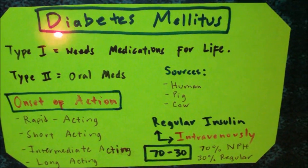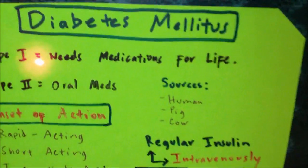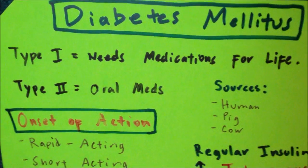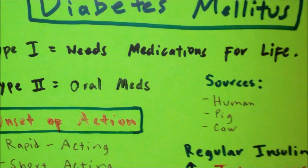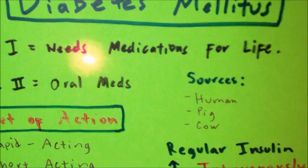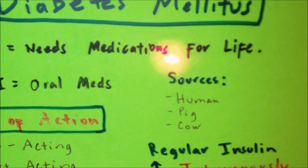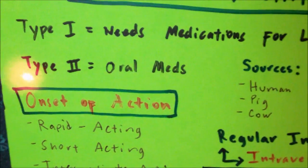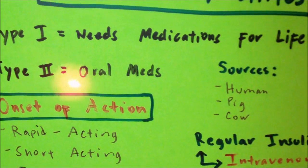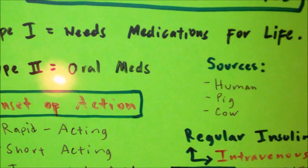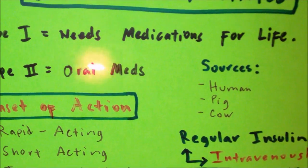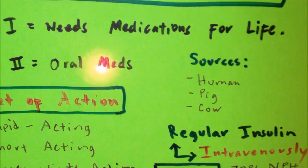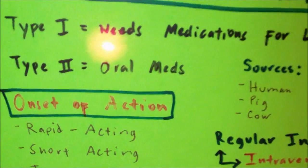Because the patient with type 1 diabetes mellitus cannot produce insulin in their body, insulin must therefore be administered for life. On the other hand, the patient with type 2 diabetes may have just a decrease in insulin production, so oral agents that can stimulate insulin production are usually the ones that are used.